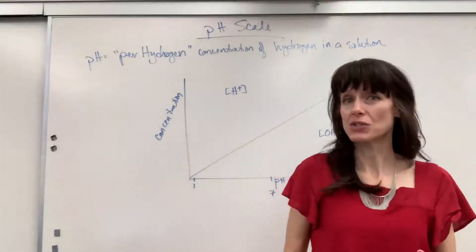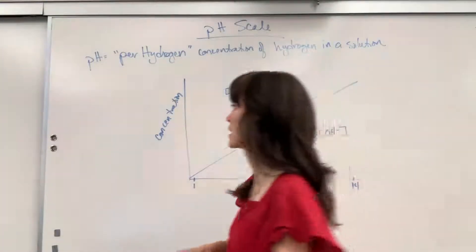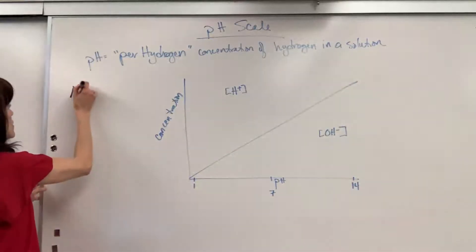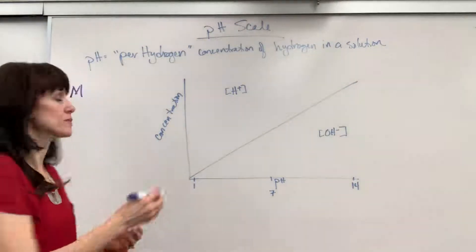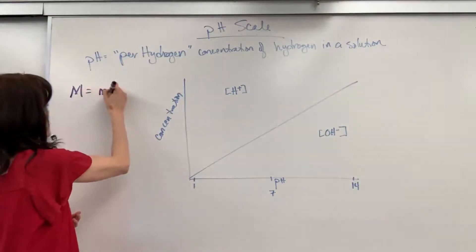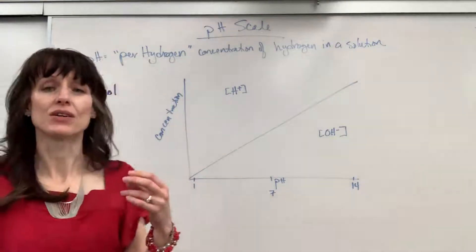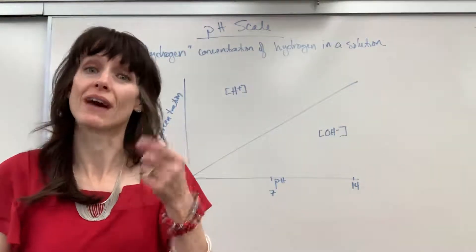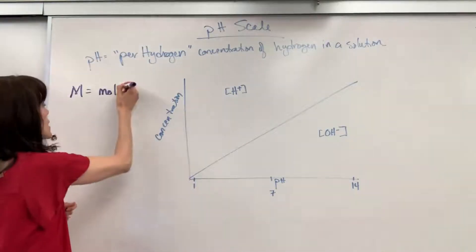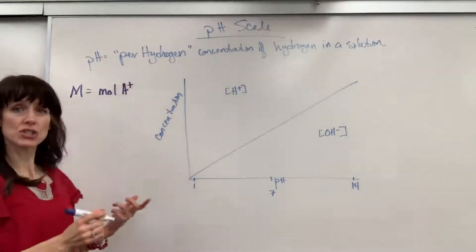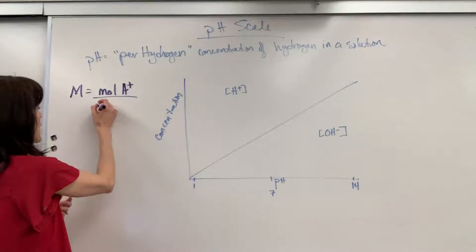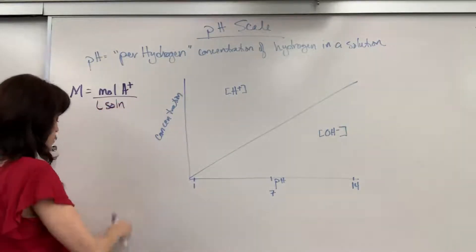Now when I say concentration, the specific units that I'm talking about is capital M, molarity. And you'll recall that molarity is going to be moles of the solute, and so in this case we're looking at moles of hydrogen very specifically. So it'll be the moles of that hydrogen ion divided by the liters of the solution.